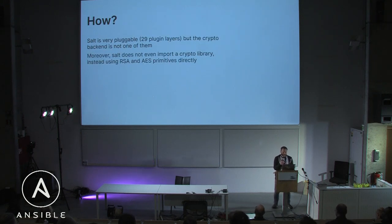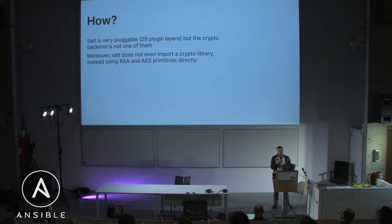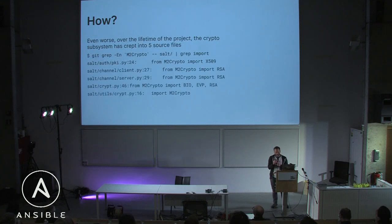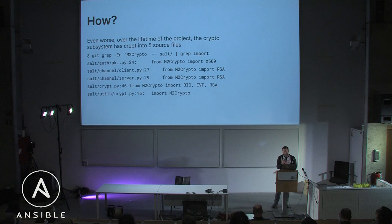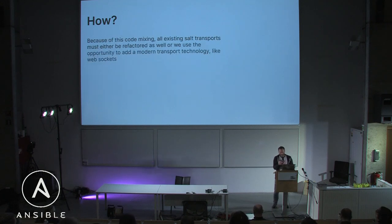So how are we going to do this? Salt is really pluggable if you have experience with it. However, the crypto backend is not pluggable — this is a problem. The transport layer is kind of pluggable, but both of those code layers are a mess. As you can see, the crypto backend has crept over time into these five files, so it's not a trivial thing to replace the crypto component in your project.